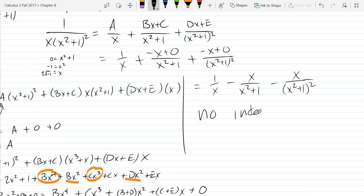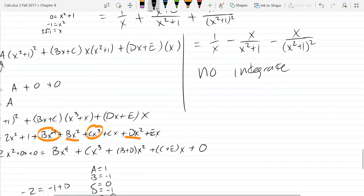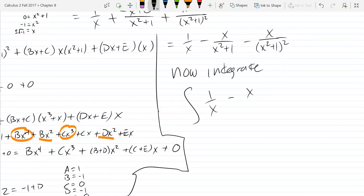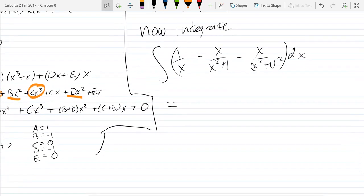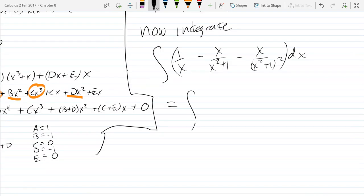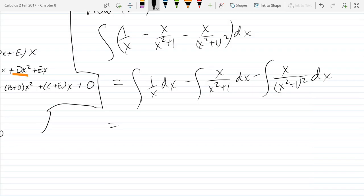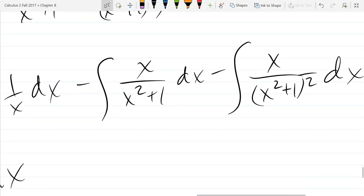So now let's integrate. So I'll split this across the sum. Sorry, integral 1 over x dx integral x over x squared plus 1 dx minus integral x over x squared plus 1 squared dx. All right. Easy integral. What's integral 1 over x? ln. That was easy.